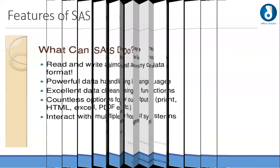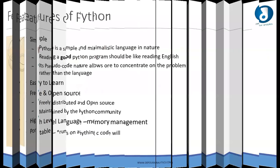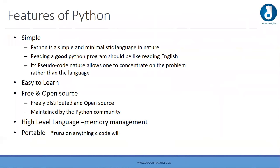Python is a simple language — it is like reading English. Its pseudocode nature allows programmers to understand it very easily and helps them focus only on the code rather than the algorithm. It is a high-level language, which reduces the complexity of coding. It is easy to learn, it is open source software that can be distributed free of cost, and it is portable — it can run on any device.